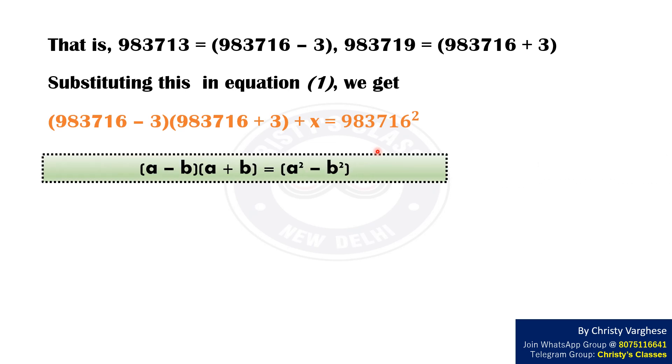We know that (a - b)(a + b) = a² - b². Thus, 983716² - 3² + x = 983716².